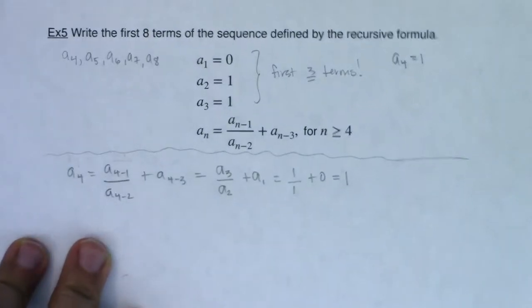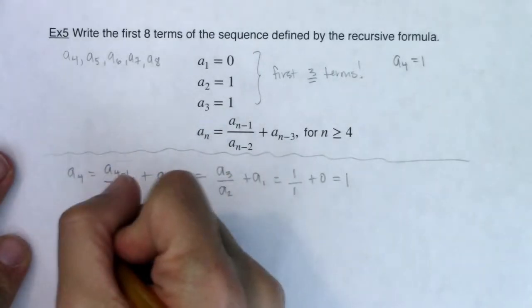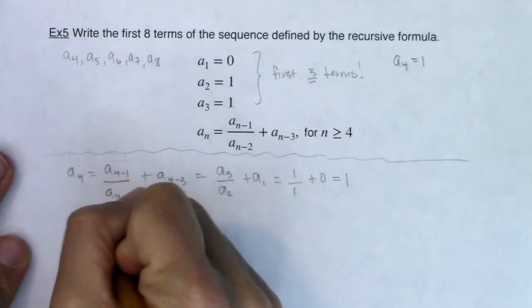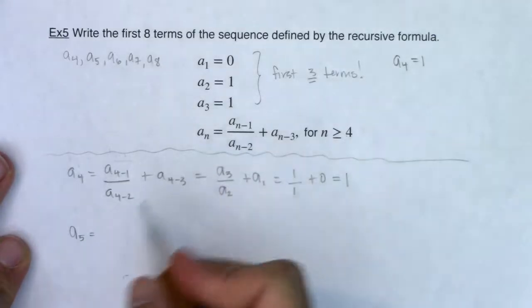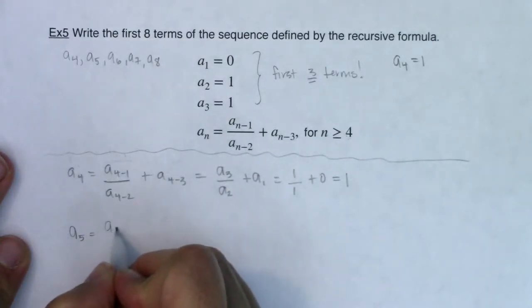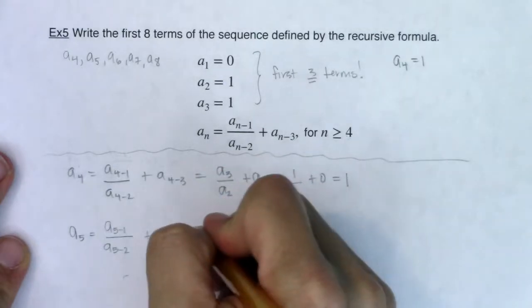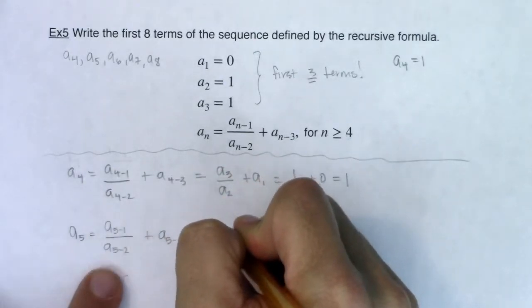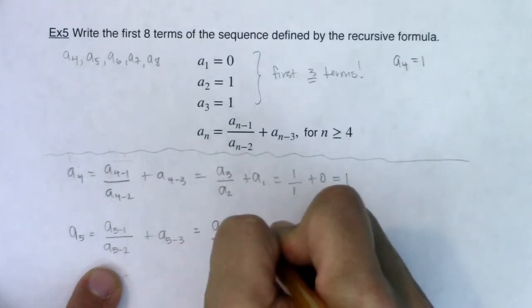And I need to work up to a sub eight. So let's see if we can figure out the next term. So let's do a sub five. Again, five is greater than or equal to four. So I'm going to use this formula. This says we should be looking at a sub five minus one in ratio to a sub five minus two. And then we have to add to it a sub five minus three. So let's see what this simplifies to. This will be a sub four over a sub three plus a sub two.